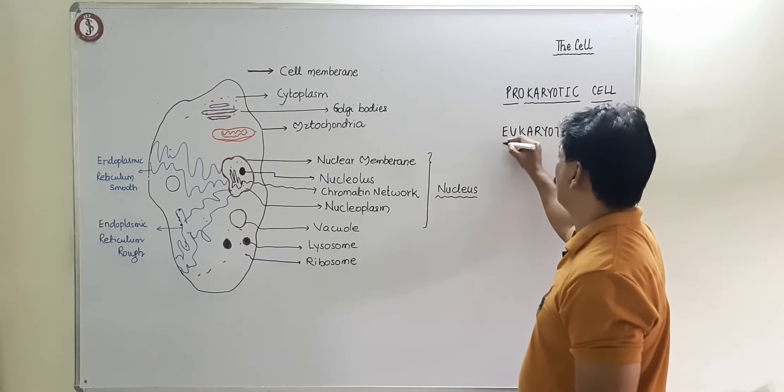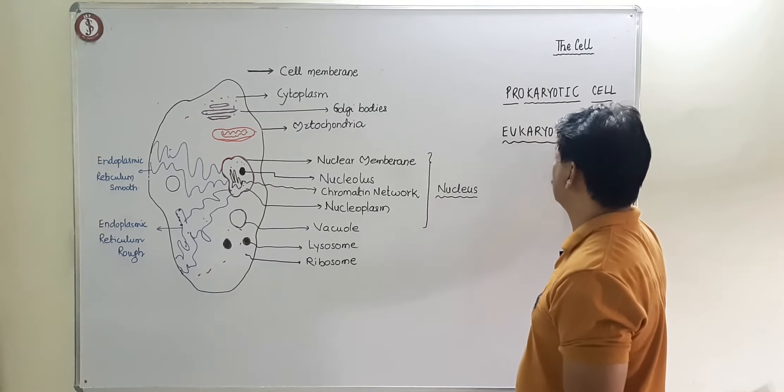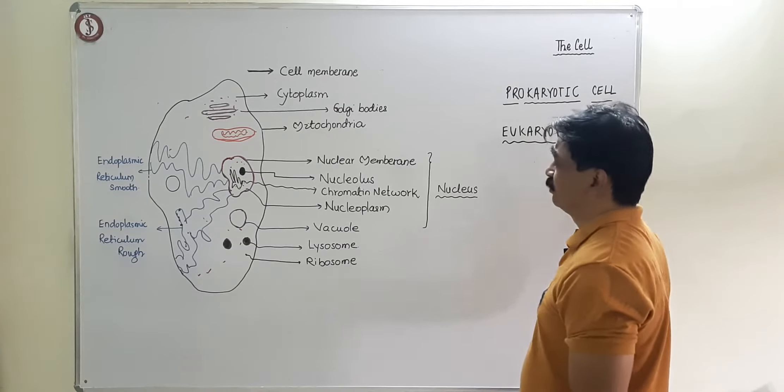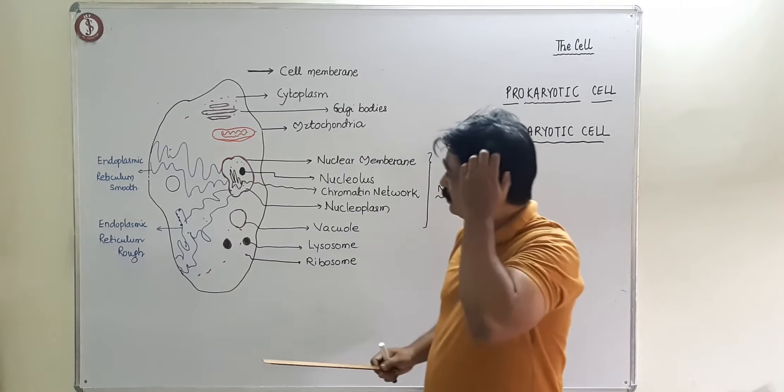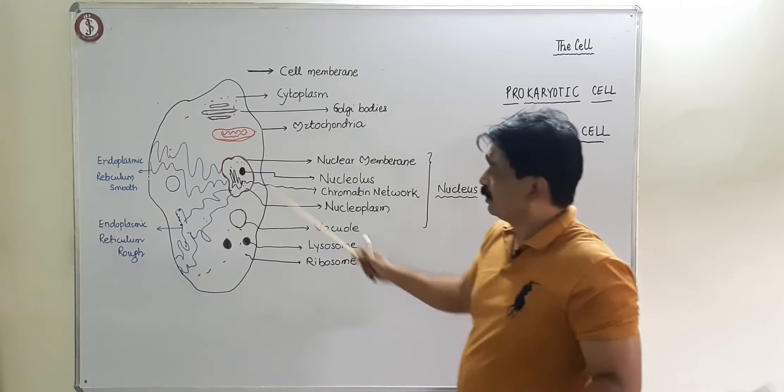Our cells — the cells of advanced animals — are eukaryotic cells. Eukaryotic means advanced nucleus, meaning we have a well-defined nucleus. Now let us look at the structure of this cell.